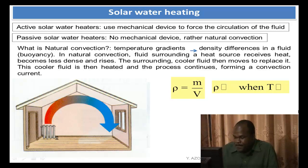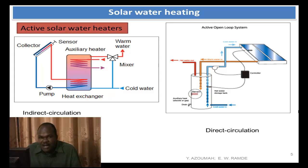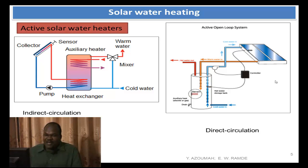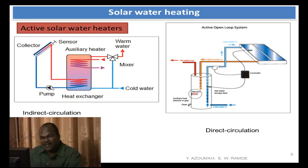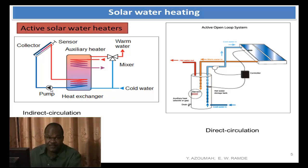These pictures are showing active solar water heaters. The left-hand side shows an indirect circulation, and the right-hand side shows a direct circulation. They are all active solar water heaters because they use pumps to circulate the water — you see the pump on the left-hand side and the pump on the right-hand side. Now, one is indirect and the other is direct. In the indirect solar water heaters, you have two loops, or let's say two fluids.